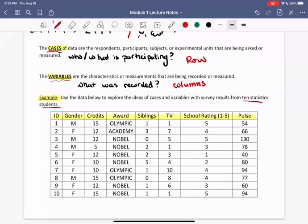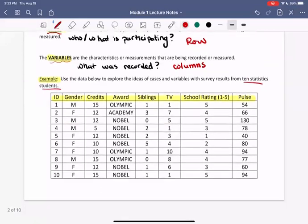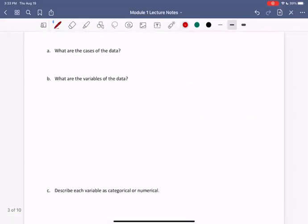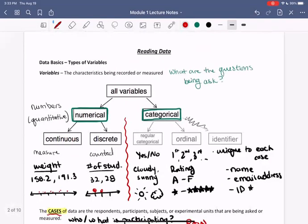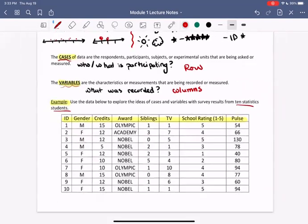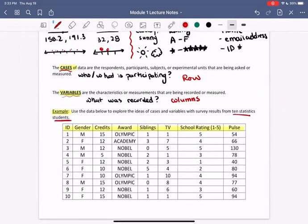So now that we've seen a bit of information about this table, let's get into the questions. So first question says, what are the cases of the data? Well, we just saw that the cases are these 10 statistics students. Again, cases, another way of saying that are who is the data being collected on?